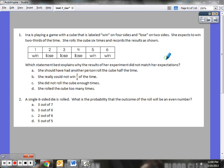So look at the first question. Ina is playing a game with a cube that is labeled win on four sides and lose on two sides. She expects to win two-thirds of the time. She rolls the cube six times and records those results as shown.